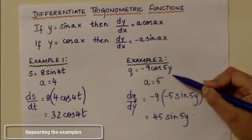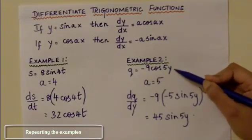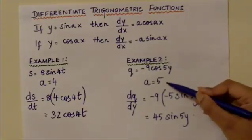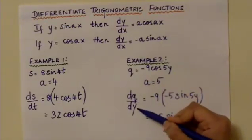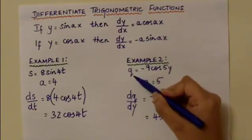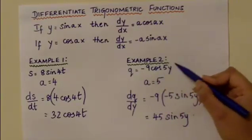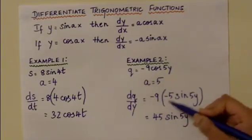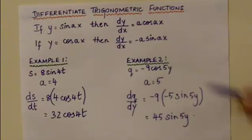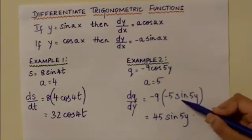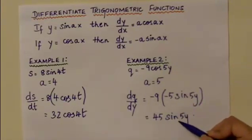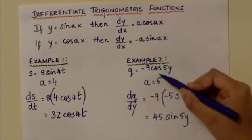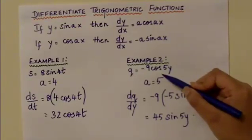Repeating Example 2: q equals minus 9 cos 5y. The coefficient of the variable y is 5, so a equals 5. Substituting into the formula dy over dx equals minus a sin ax: dq over dy equals minus 9, the coefficient of the whole term, times the differentiation of cos 5y, which is minus 5 sin 5y. So minus 9 times minus 5 equals plus 45 sin 5y, the differentiation of q equals minus 9 cos 5y.